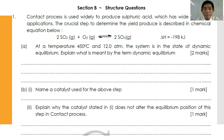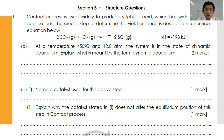Okay, so with the last session, let's begin our lesson. We are going to continue with Section B, which is the structure questions for chemical equilibria, starting from question number one. The contact process is used widely to produce sulfuric acid, which has a wide variety of applications. The crucial step to determine the yield is described as: 2SO₂ + O₂ → 2SO₃, ΔH = −198 kJ. At the temperature of 150°C and 12 atmosphere, the system is in the state of dynamic equilibrium. Explain what is meant by the term dynamic equilibrium.